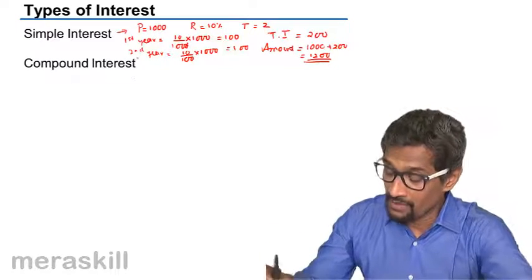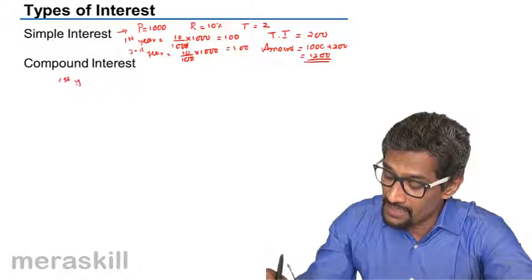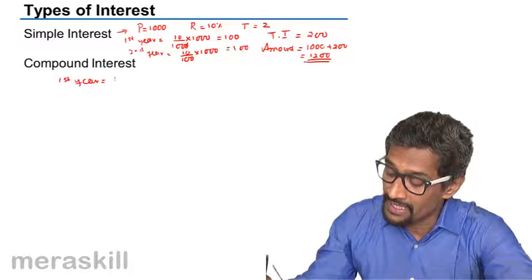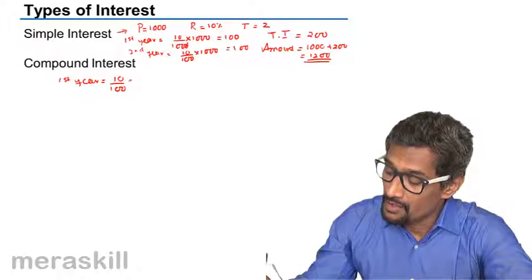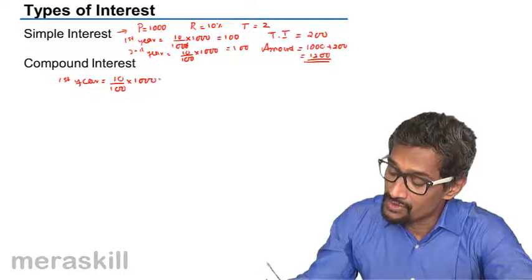Now compound interest is a compounding process. So the same thing for the first year would remain the same, it's going to be 10% of 1000, which is going to be 100.